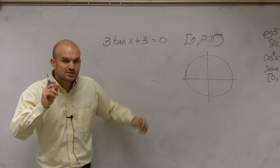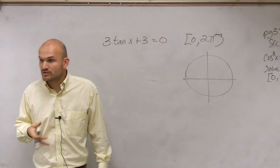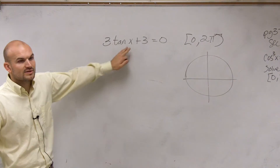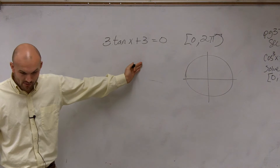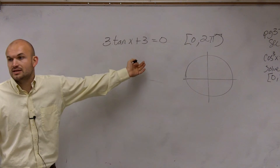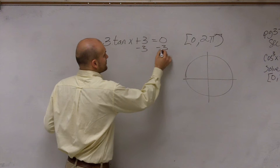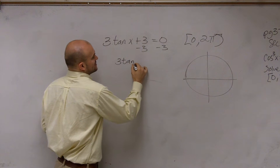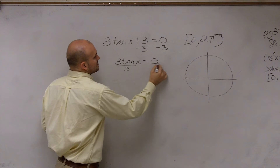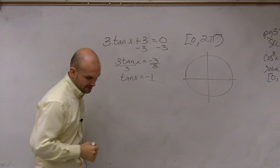We're actually going to solve this problem not on the interval, and I'm going to show you how to solve it when you don't have the interval of 0 and 2π. So first of all, when solving a problem like this, the main important thing we want to make sure we do is isolate our tangent of x. So we're going to subtract 3. Then I have 3 tangent of x equals negative 3, divide by 3, and therefore tangent of x equals negative 1.